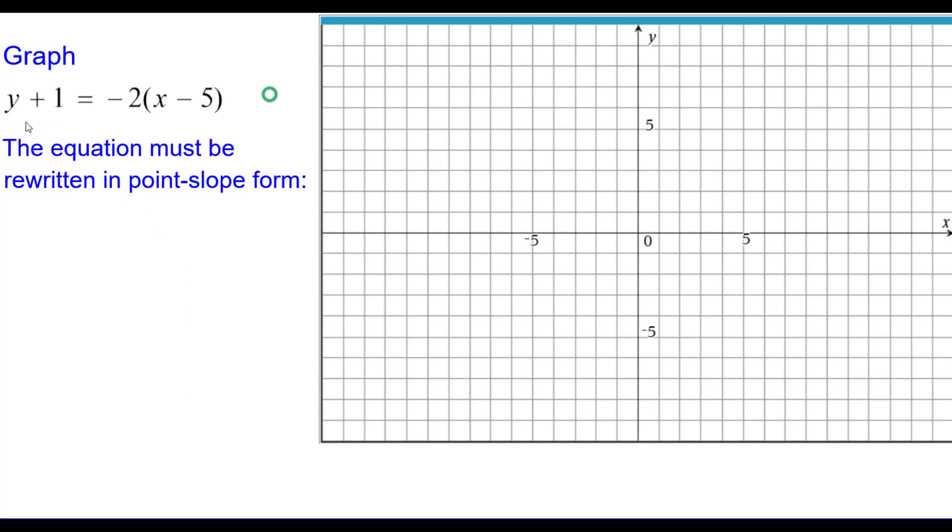It's close but this y plus 1 needs to be rewritten as a difference because it's y minus y sub 1 equals m times the quantity x minus x sub 1. So we'll rewrite y plus 1 as y minus a negative 1. The rest of the equation is fine.